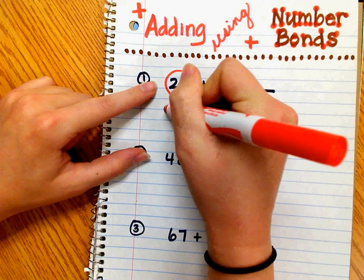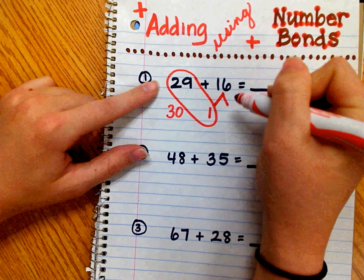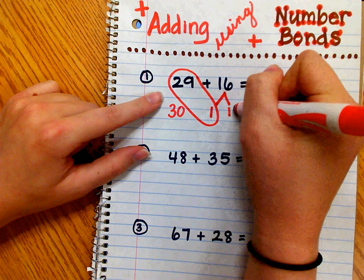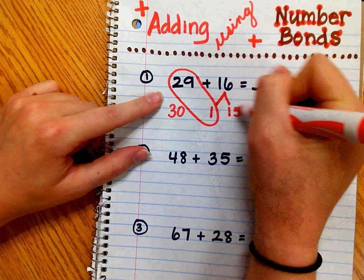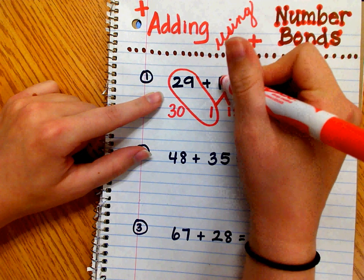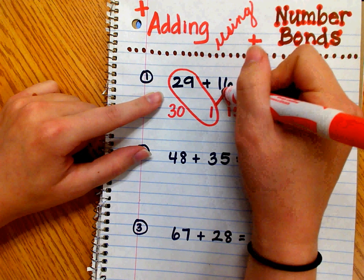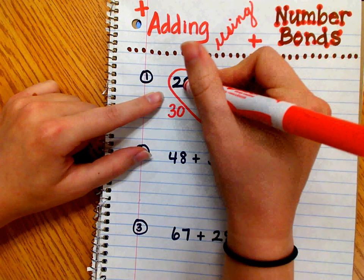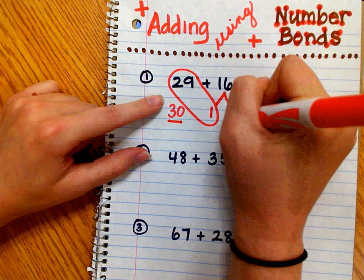29 plus 1 equals 30. Now if I take 1 from 16, I will have 15 left. 16 minus 1 equals 15. And this is the number bond right here. 16 is the whole, and the two parts are 1 and 15. I gave 1 to 29 to make 30, and I had 15 left.